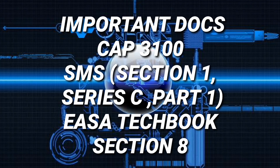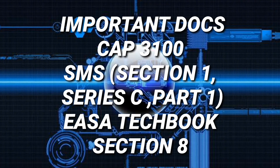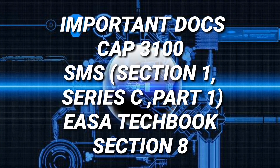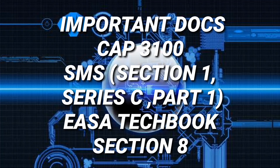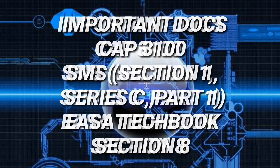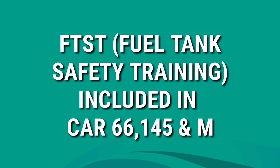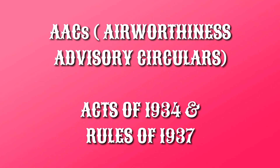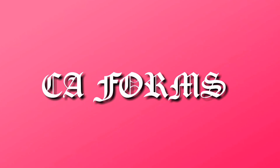The additional documents to be studied after main CARs and series are as follows: CAP 3100, SMS which is included in Section 1 Series 3 Part 1, EASA tech book for Module 10, and Section 8 — aircraft operations — which is recently a favorite of DGCA. If you don't study Section 8, your chance of clearing Module 10 drops to 50% or less. Also, FTST (Fuel Tank Safety Training), included in CAR66, 145, and M, is an all-time favorite of DGCA. AAC (Airworthiness Advisory Circulars) published on the DGCA site are a real game changer. The Acts and Rules of 1934 and 1937 respectively are essential, and the CA forms are a real X-factor for clearing Module 10.